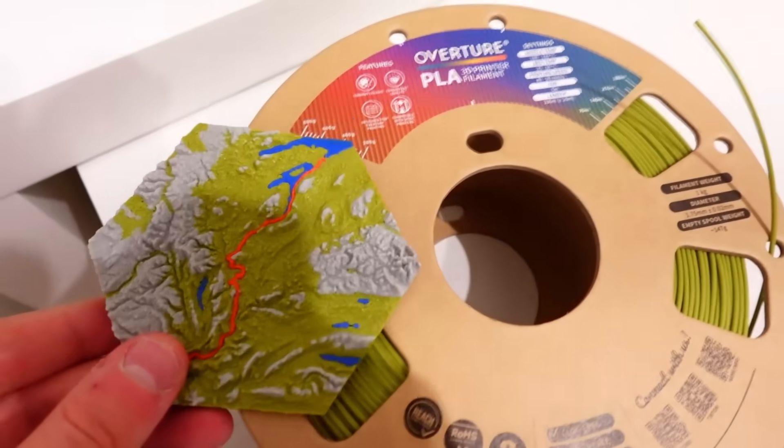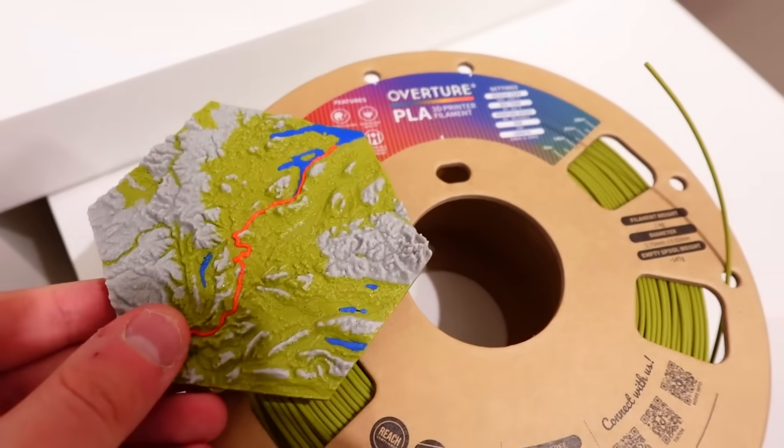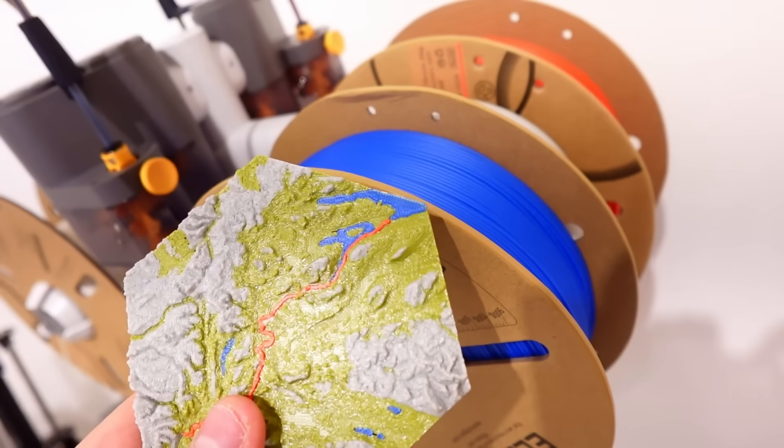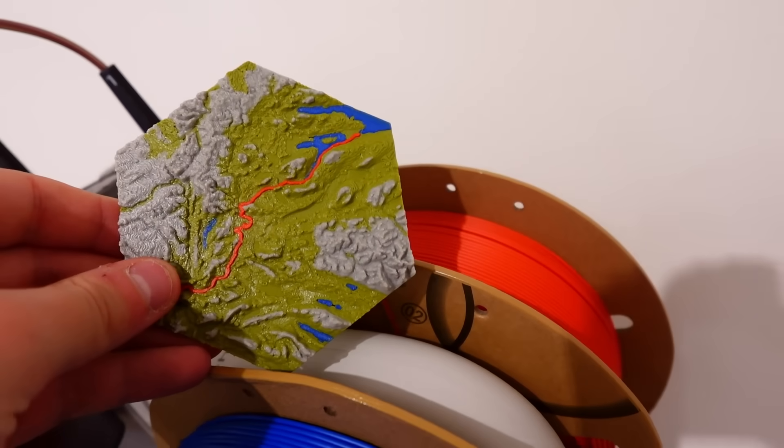The filament I'm using is the olive green PLA from Overture and the other colors are from Elegoo. I'll link them in the video description if you want to achieve the same results as me.